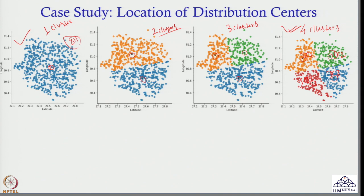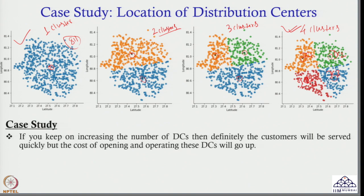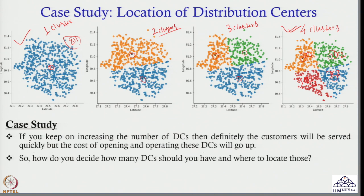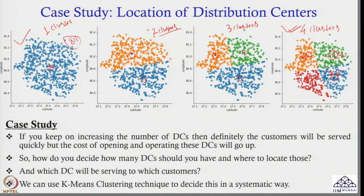So how do I decide how many clusters are optimum? Once I decide the number of clusters, I need to determine where to locate my distribution centers. All of this should be answered using the K-means clustering technique. If you keep increasing the number of DCs, customers are served more quickly, but the cost of opening and operating those DCs goes up. So how many DCs should you have, where to locate them, and which DC serves which customers?